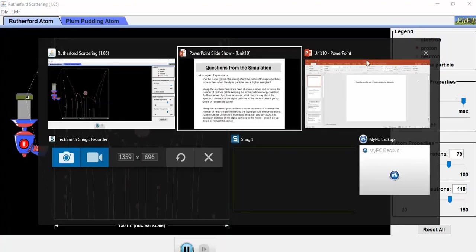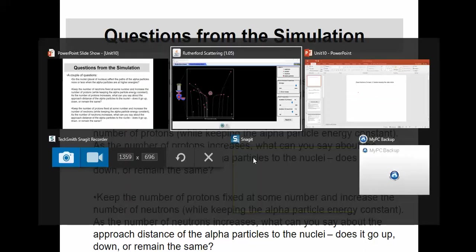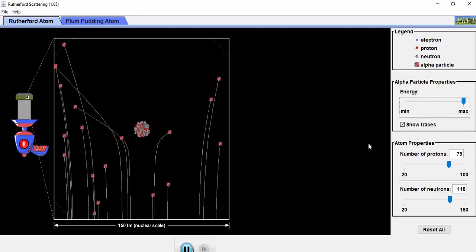The next question: if I keep the number of neutrons fixed and increase the number of protons, keeping alpha particle energy constant, as the number of protons increases, what can you say about the approach distance? Does it go up, down, or remain the same? Think about what you might expect to see.